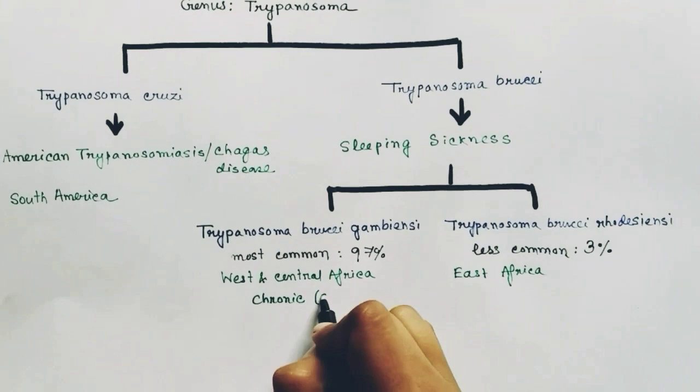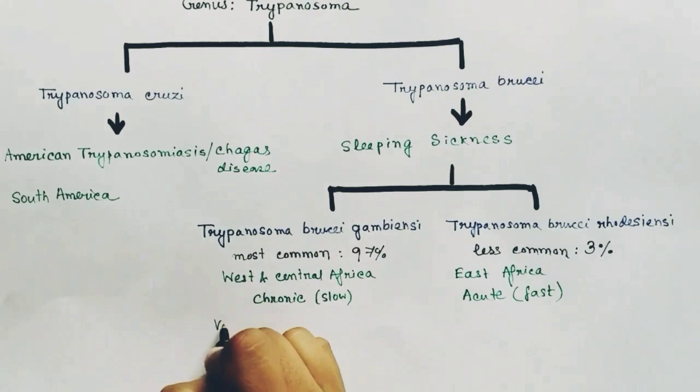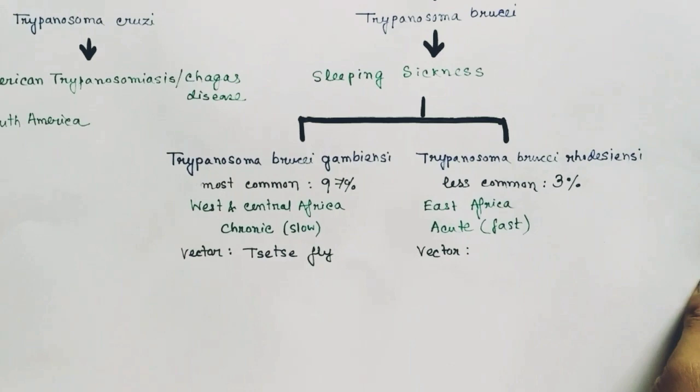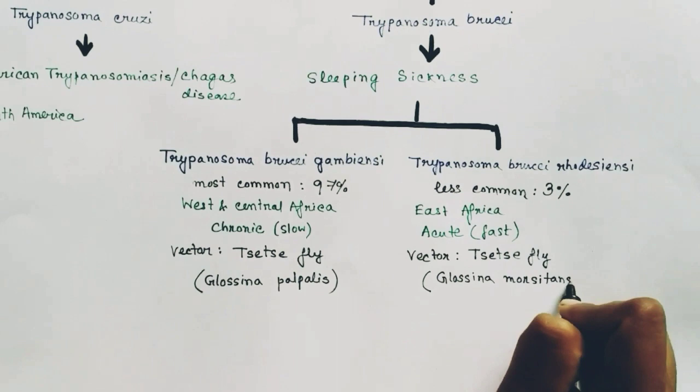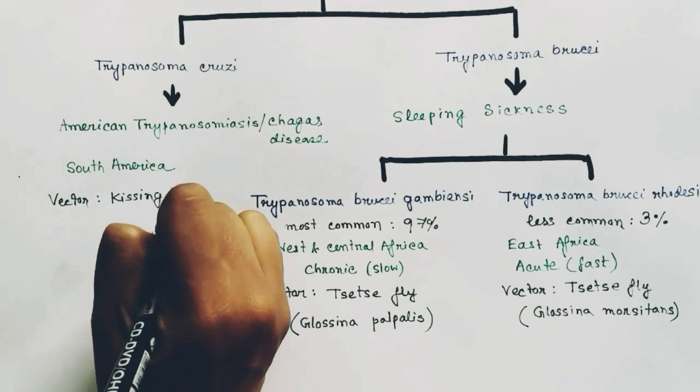The sleeping sickness caused by gambiense is chronic and that caused by rhodesiense is acute. The vector for both is the tsetse fly, but the species differ: Glossina palpalis for gambiense and Glossina morsitans for rhodesiense. The vector of Trypanosoma cruzi is the kissing bug.